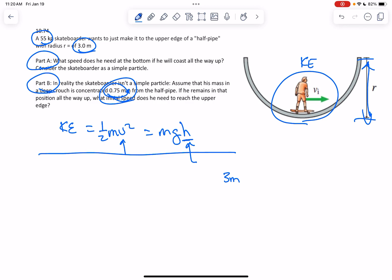if he's 0.75 meters—his center of mass is here—you're going to subtract 0.75 meters. That becomes the new h, and you still solve for v.